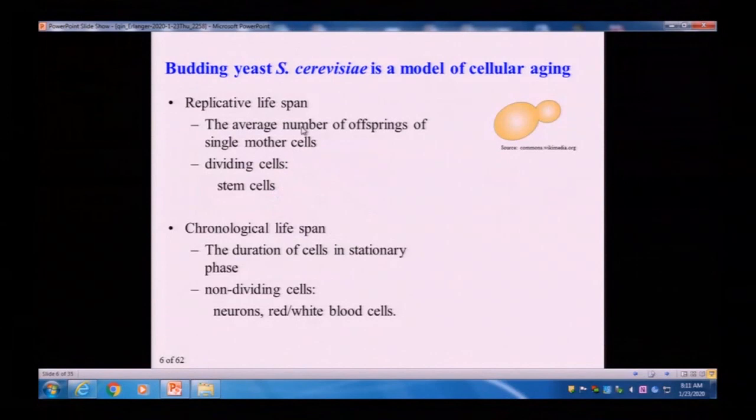So why some species have this non-aging characteristic, but we human beings, or mouse, or fruit fly, or worms, or even bacteria ages. So basically, from virus to cellular organism, the aging goes from non-increasing to increasing. And so I actually use the Saccharomyces cerevisiae as a model to study cellular aging.